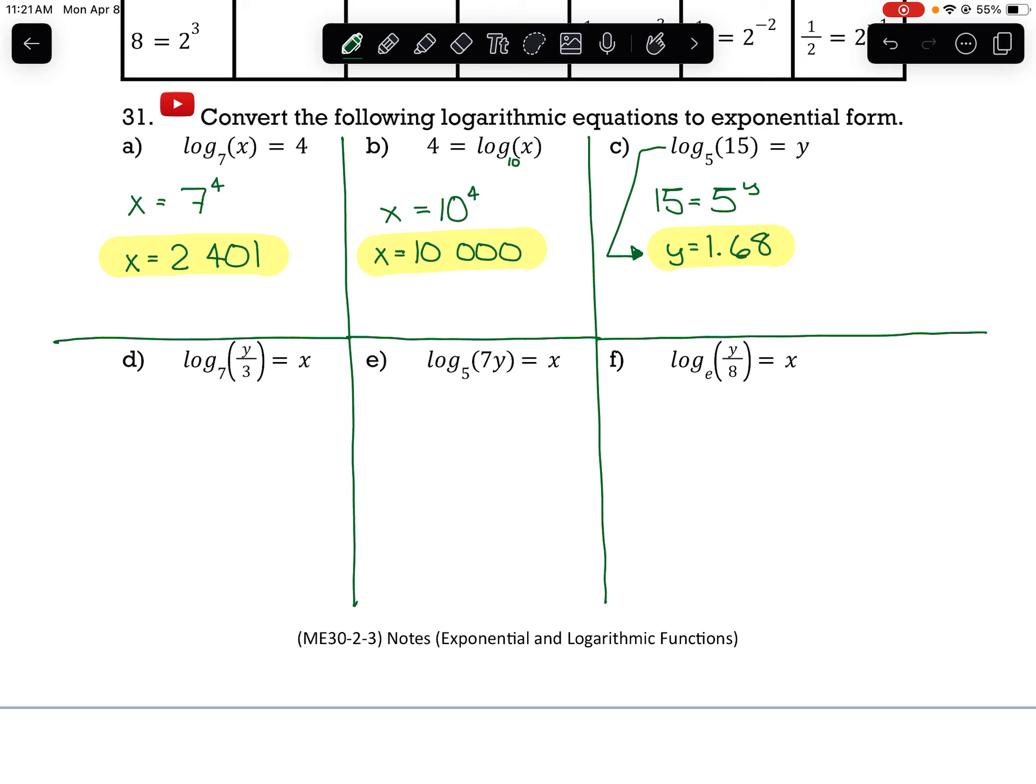So this time, my base is 7 and the exponent's x. And my argument, seeing as it's y over 3, is going to become what my power is equal to. So the best I can do here is isolate for y.